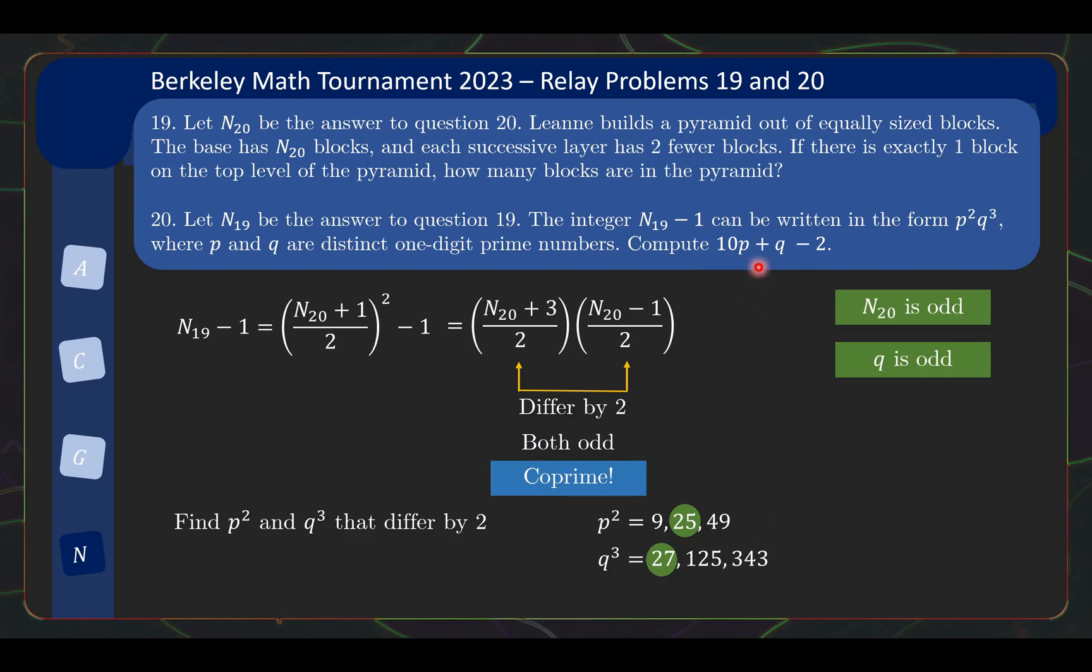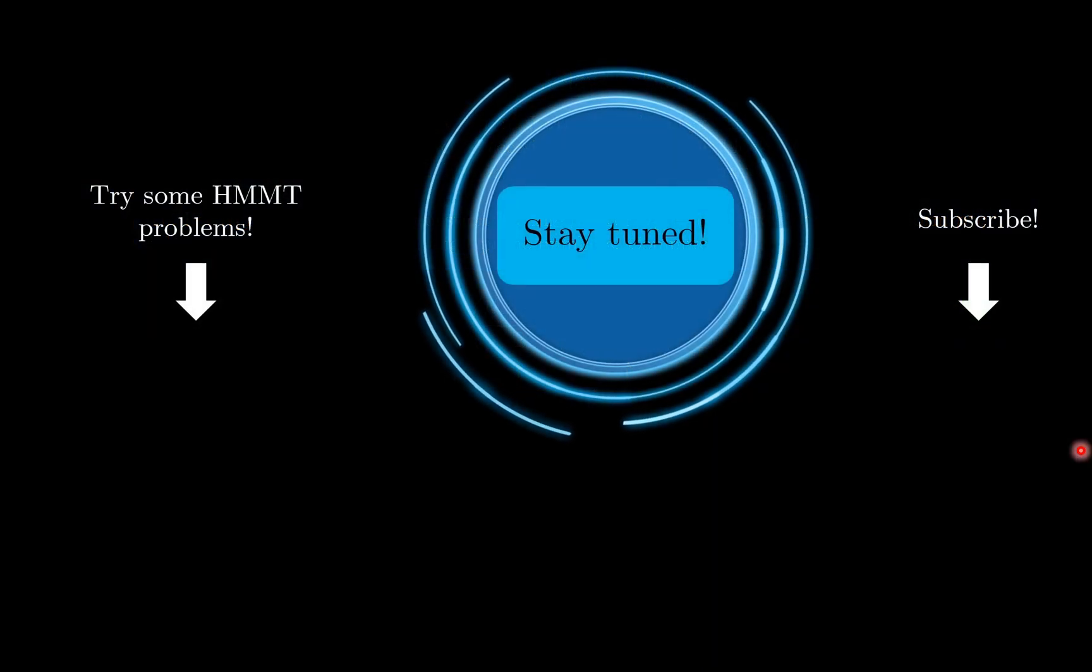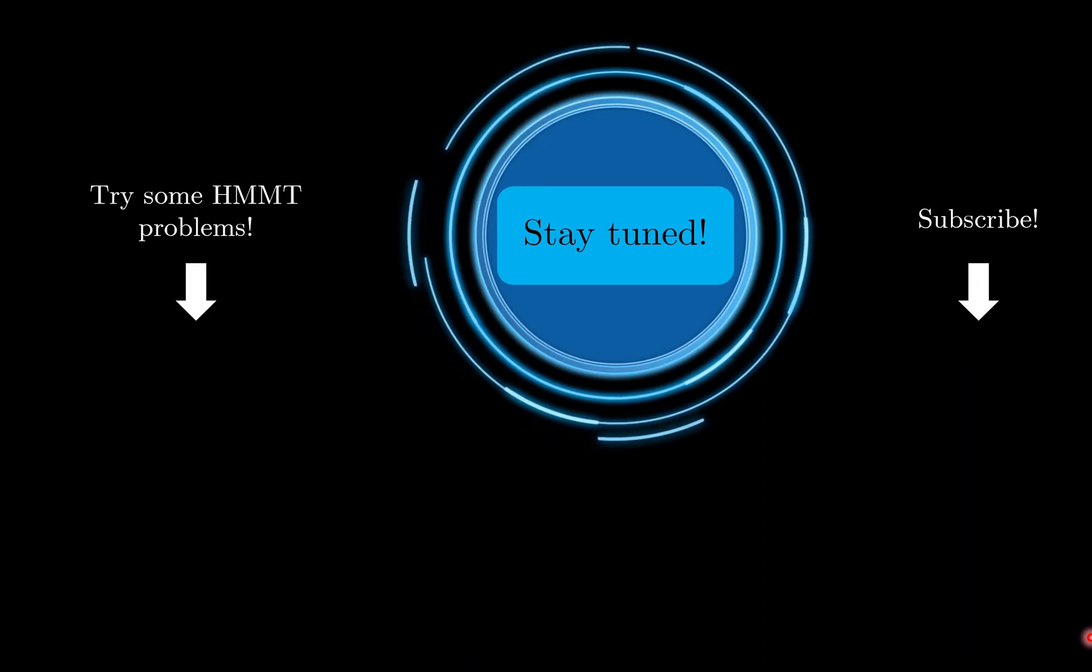So from here we can finish out the problem. We can compute the answer to question 20 is 51, and the answer to question 19, which is given by this square over here, is 26². So that's it. I hope you enjoyed this pair of problems which depend on each other. And do stay tuned to the channel for more interesting math videos. Subscribe to the channel, and I'll see you soon.